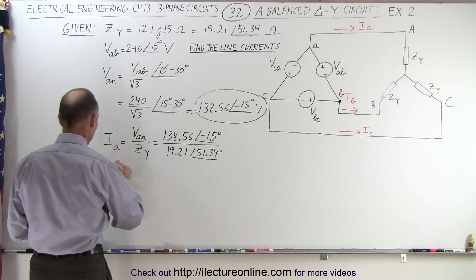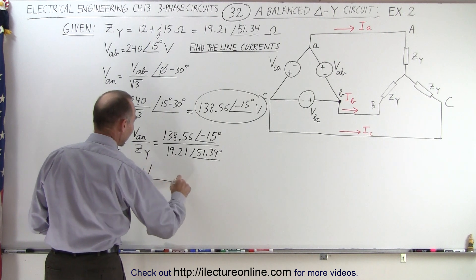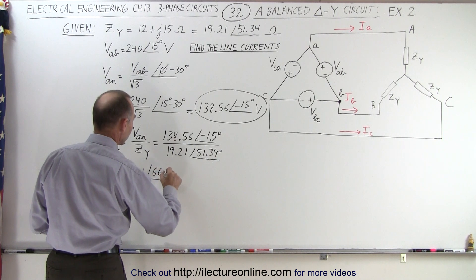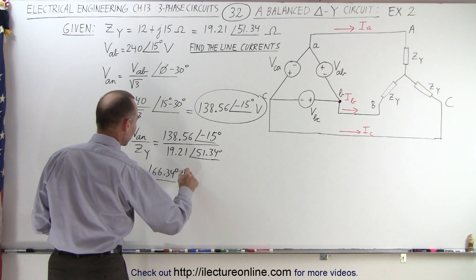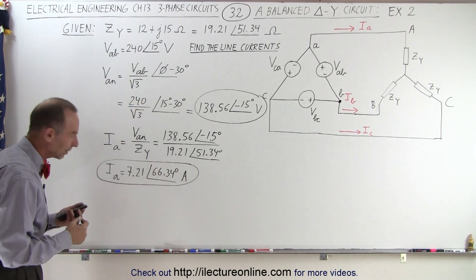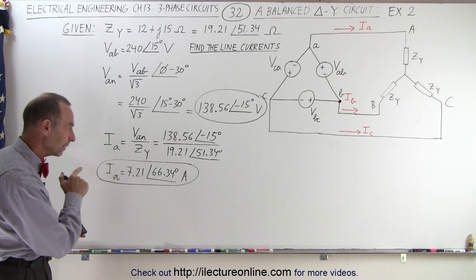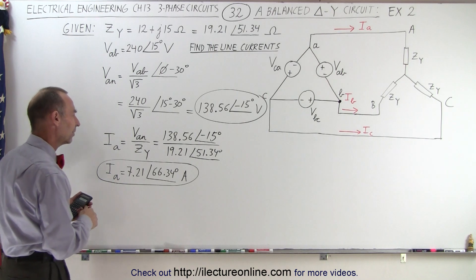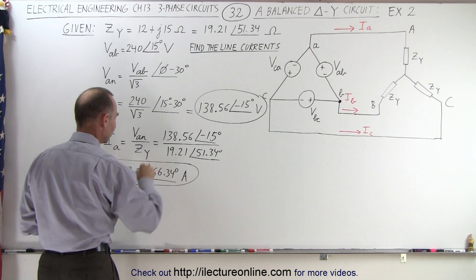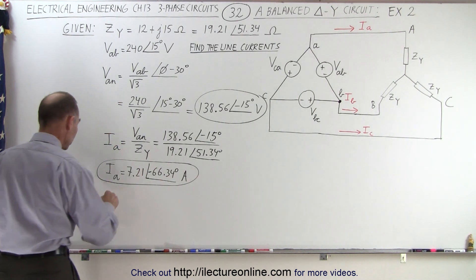So I sub A is equal to 7.21 — and the phase angle would be minus 66.34 degrees, in amps. That's our first line current, I sub A. The phase angle should be minus 66.34 degrees.